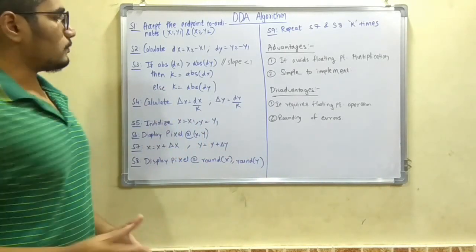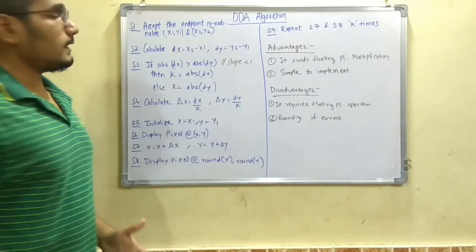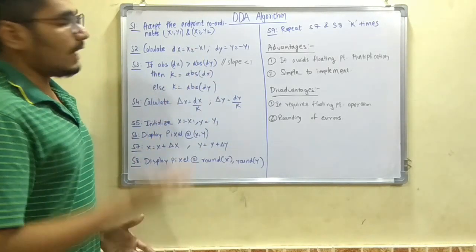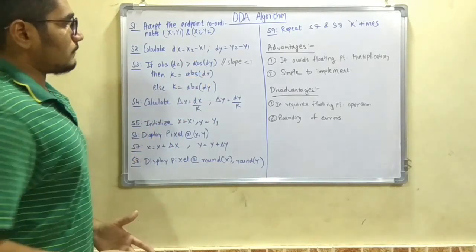So DX is that particular portion which is calculated by the difference between x2 and x1, that is x2 minus x1, and DY is y2 minus y1.